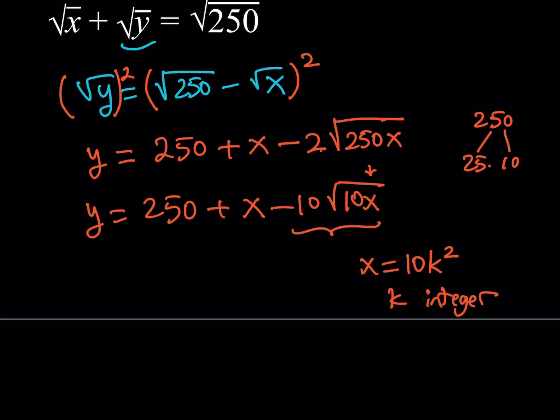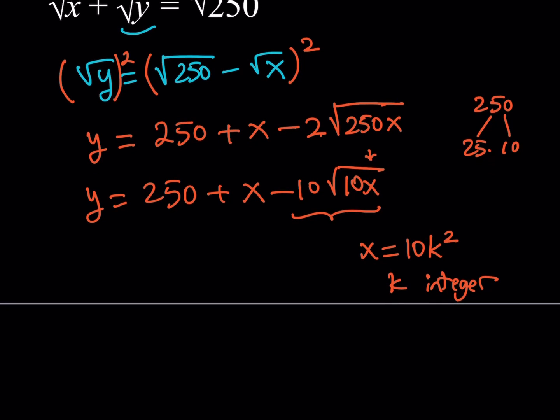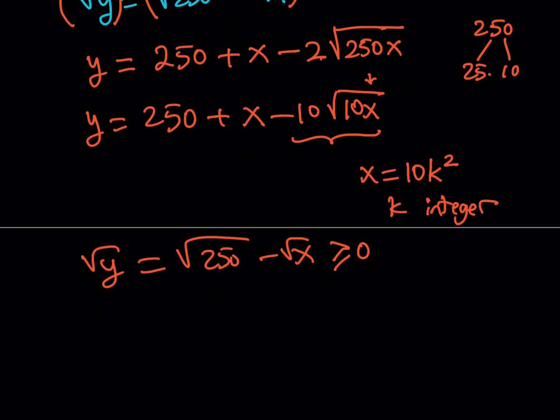Now once you realize this we want to find an upper bound for k. And we can do that by considering the following. If you go to the equation where we isolated the square root of y, notice that square root of y is equal to the square root of 250 minus the square root of x. Obviously square root of y is greater than or equal to 0 all the time which means this expression is greater or equal to 0 which means the square root of x is less than or equal to the square root of 250 right?